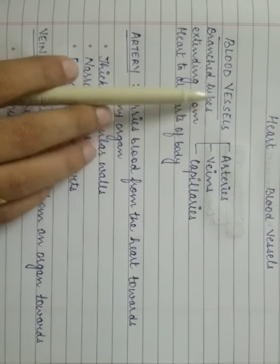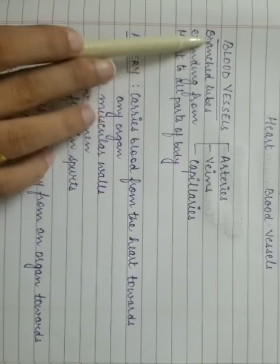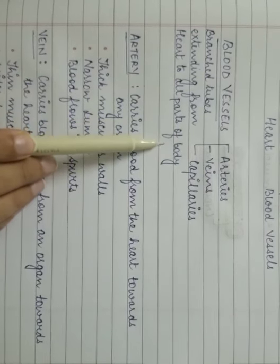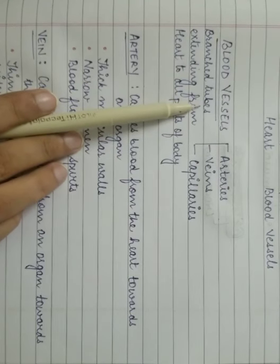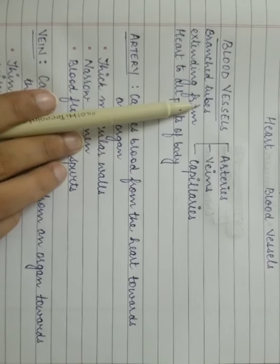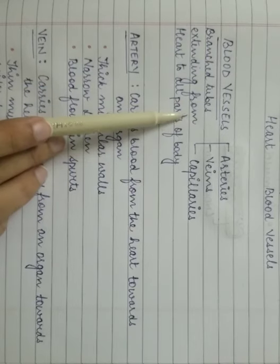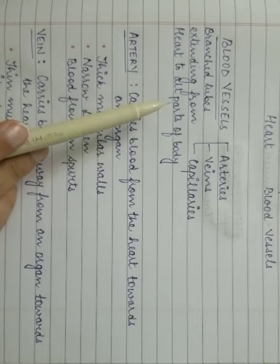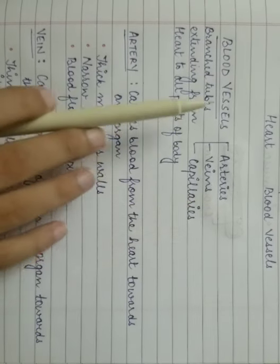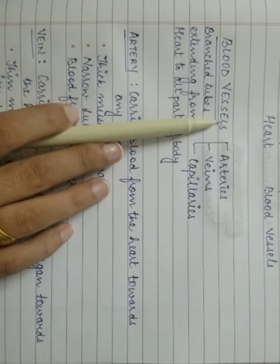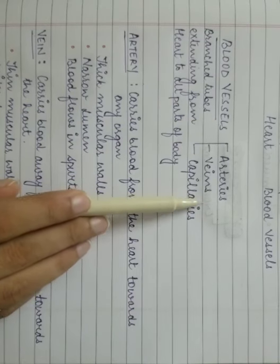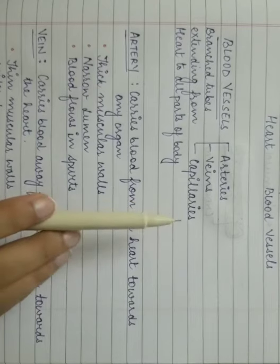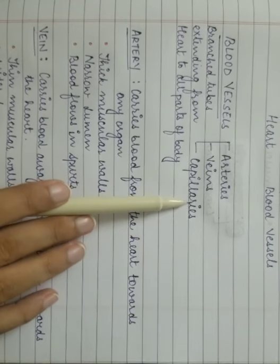Now, what are blood vessels? They are the branch tubes which extend from the heart to all parts of the body. These blood vessels transport blood to the different parts of the body and also bring blood from the different parts of the body to the lungs for oxygenation. Blood vessels are of three types: arteries, veins, and capillaries. One by one we will be studying about their structure and the functions they perform.